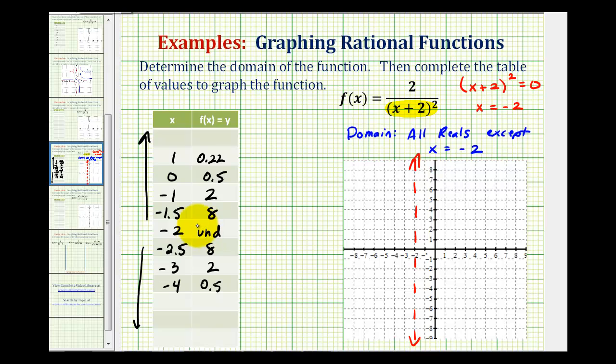Now we'll go ahead and plot these points and sketch our graph. So 1, 0.22 is just above the x-axis here. 0, one-half or 0.5 would be here. -1, 2, and -1.5, 8. So here are the points on the right side of the vertical asymptote.